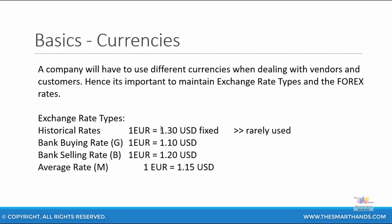To give an example, you can have a historical rate where 1 EUR equals 1.30 USD. You can also put your bank buying and bank selling rates for this currency — for example, 1 EUR equals 1.10 as the bank selling rate, and 1 EUR equals 1.20. The average rate is calculated as the average between the buying rate and the selling rate. So in this example, the average rate is 1 EUR equals 1.15 USD, which is the middle between the buying and selling rate.